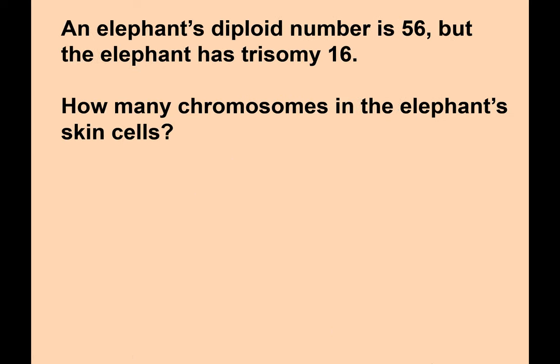One more thought question: an elephant's diploid number is 56, but the elephant has trisomy 16 — I'm totally making this up, I don't know if elephants can have trisomy 16. How many chromosomes in the elephant's skin cells? If the elephant has 56 but it has trisomy, it's going to have an extra chromosome, so it's going to have 57. That's how you use these numbers.